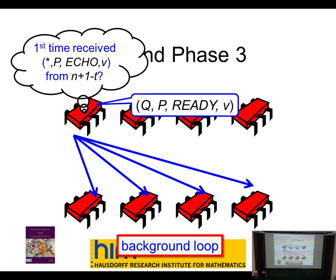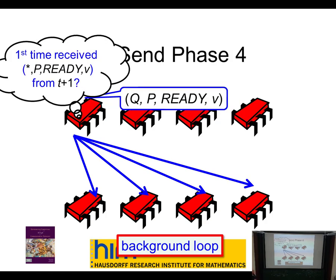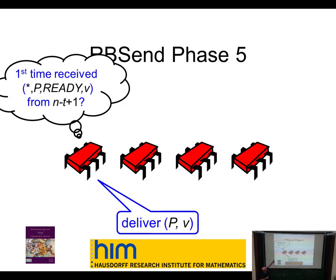If it's the first time I receive t+1 copies of a ready message, I know that one was sent by an honest process because there are only t bad guys. So some of these messages we want all-but-t of, and some we want t+1 of — why this is so you can discover in the depths of the proof. After three rounds of broadcast, we deliver the message. This protocol satisfies those conditions I showed you: Byzantine processes can lie about their message, but they can't create confusion by sending to one and not the other, because good processes pick it up, forward it, and validate it.